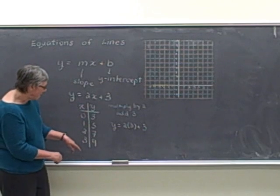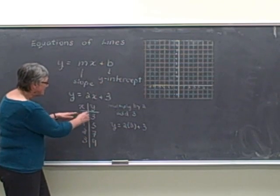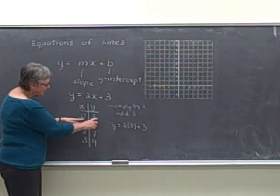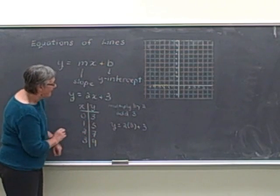And now I can simply graph these points. And when I graph them, I'm graphing them as the ordered pairs, 0, 3, 1, 5, 2, 7, and 3, 9.